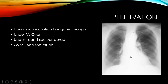Penetration looks at how much radiation is going in and whether it's enough or too much. The way you assess this is by looking at the vertebrae — you should be able to just about see them. If you can't see the vertebrae it's underpenetrated, and if you can see them too clearly it's overpenetrated. That can affect the quality of the image of any structures or abnormalities in the lung field.